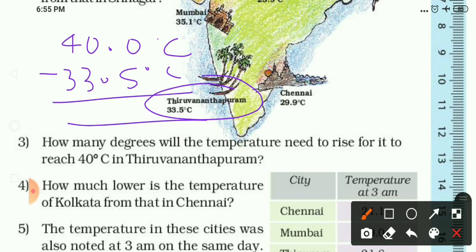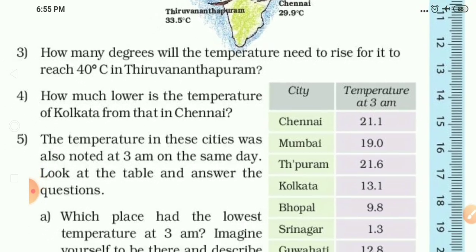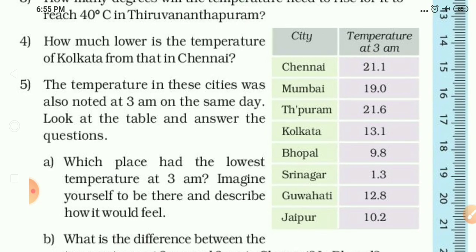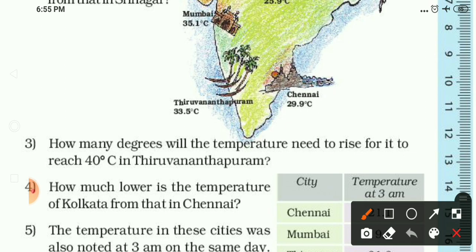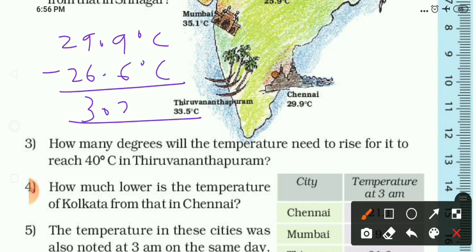Question 4: How much lower is the temperature of Kolkata than that of Chennai? Once again we find the difference. The temperature of Chennai is 29.9 degrees Celsius and the temperature of Kolkata is 26.6 degrees Celsius. Subtracting gives 3.3 degrees Celsius.